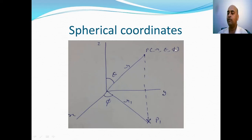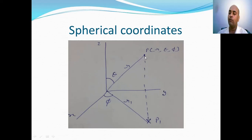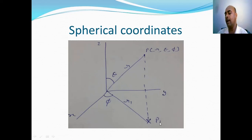In spherical coordinates, point P lies on the surface of a sphere and is represented by three values: R, theta, and phi. R is the radial distance from the origin to point P. The radial line OP makes angle theta with the Z axis. If we draw a perpendicular from point P on the XY plane, it cuts the plane at point P1, and the line OP1 makes angle phi with the X axis.